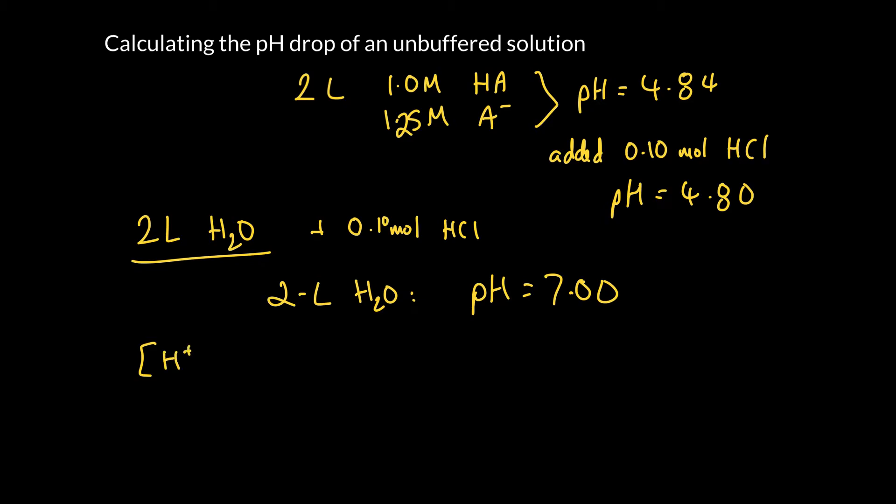So the pH is the negative log of the H plus concentration. So we've added essentially 0.1 moles of H plus. Remember the HCl is a strong acid so it 100% breaks down. And we've added it to 2 liters.